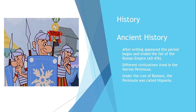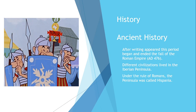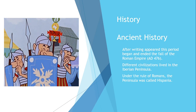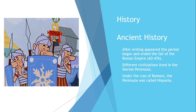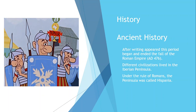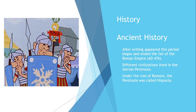The first period is Ancient History. This period began after writing appeared and ended with the fall of the Western Roman Empire in AD 476. During this period, different civilizations lived in the Iberian Peninsula. In 218 BC, the Romans came to the Iberian Peninsula. Under their rule, the peninsula was called Hispania.